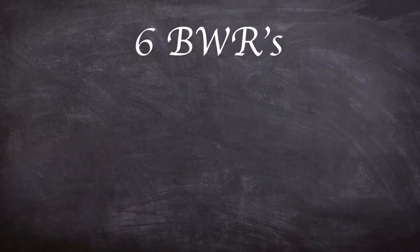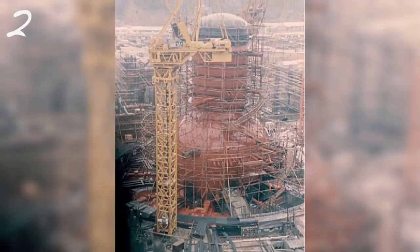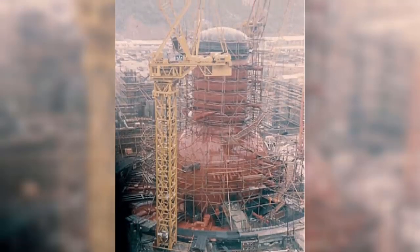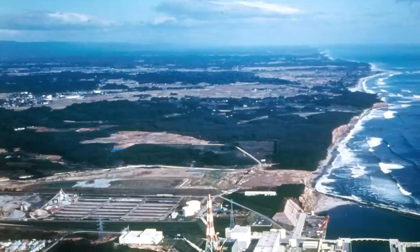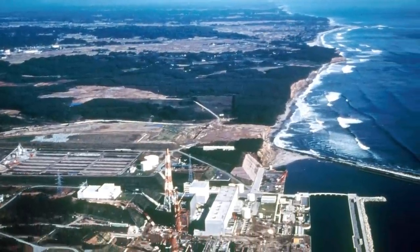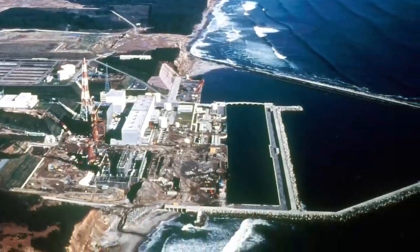The site houses six boiling water reactors: three built by General Electric, two by Toshiba, and one by Hitachi, although all were designed by GE. Construction began in 1967 on Unit 1, with commercial operation beginning in 1972. Over the next seven years, the remaining five units came online with Unit 6 commissioned in October 1979.